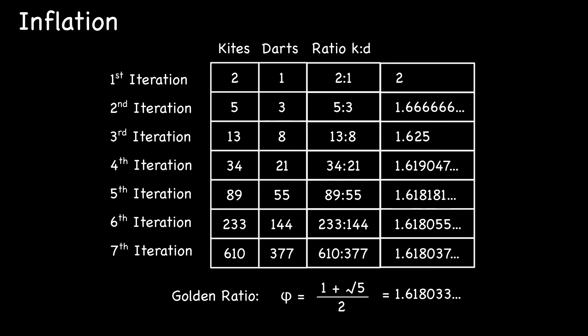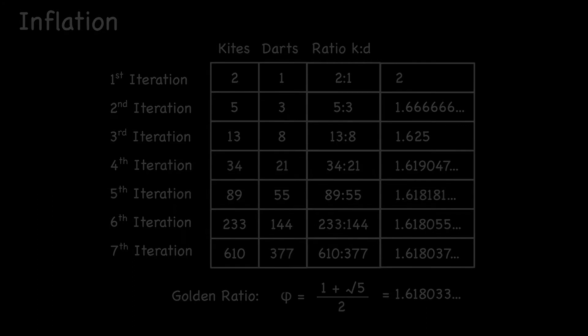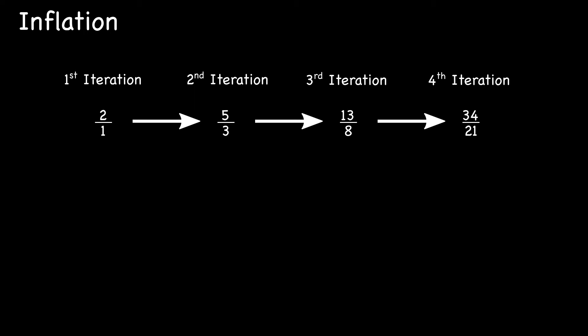Let's see if we can generalize from this particular example of inflation. Let's look at the number patterns. Kites to darts, two to one goes to five to three. So we're taking the one plus the two gives us the denominator. Then the two plus the three gives us the numerator. Using letters, k plus d would give us the denominator and k plus k plus d makes 2k plus d for the numerator.